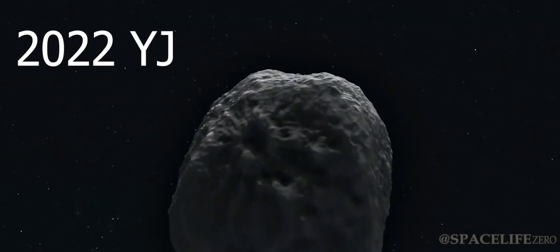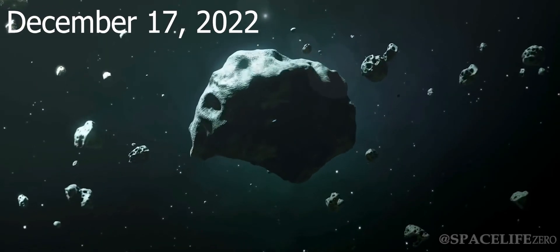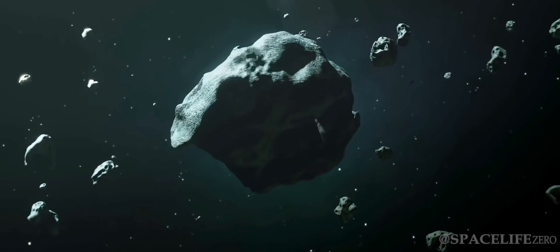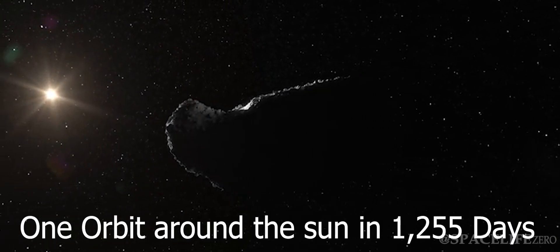Asteroid 2022-YJ was discovered on December 17, 2022. It has a diameter of 5 meters and it makes one orbit around the Sun in 1,255 days.